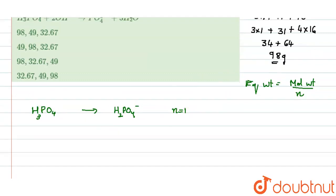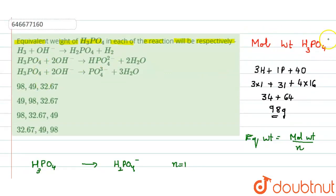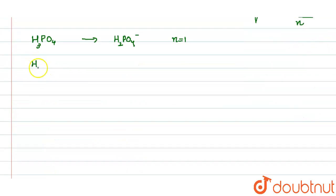So in the next case it is H3PO4 to HPO4 2 minus. That means two hydrogens are replaced here, so n factor is 2.